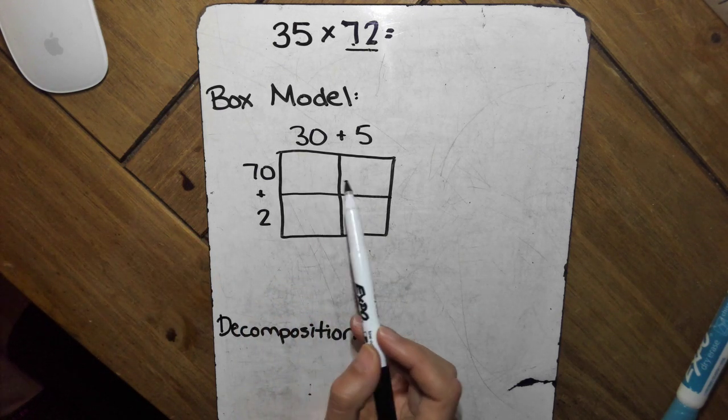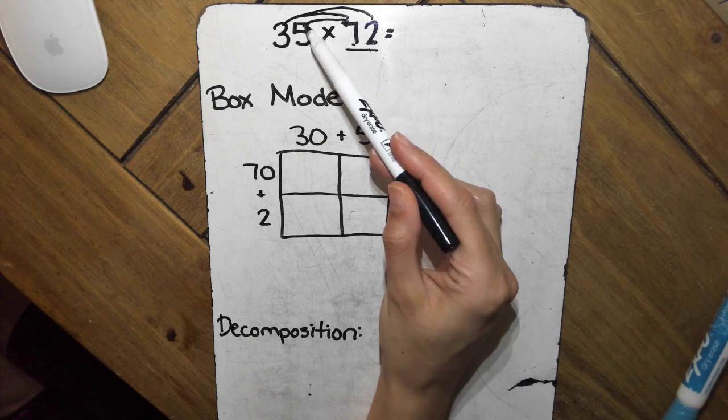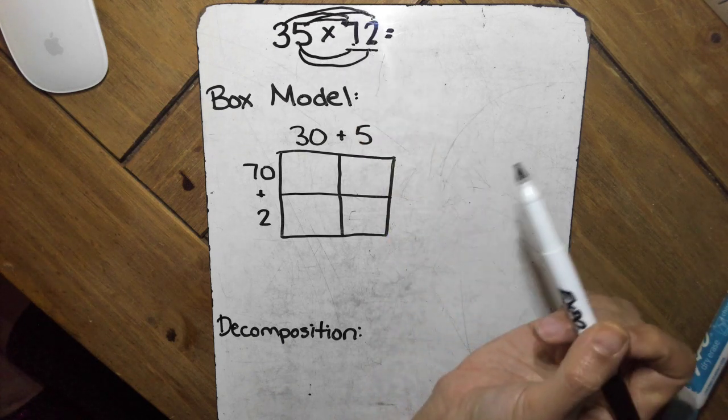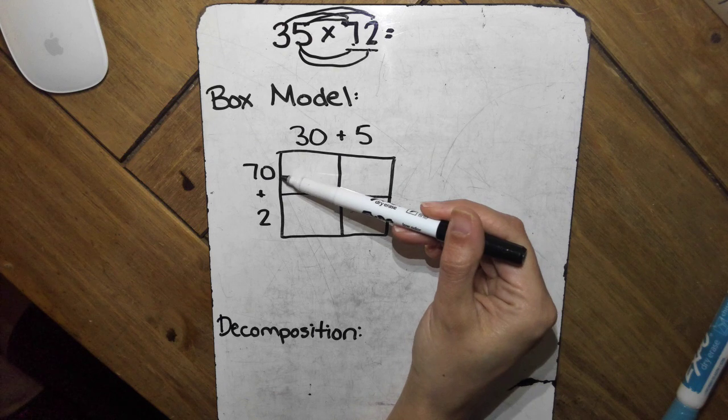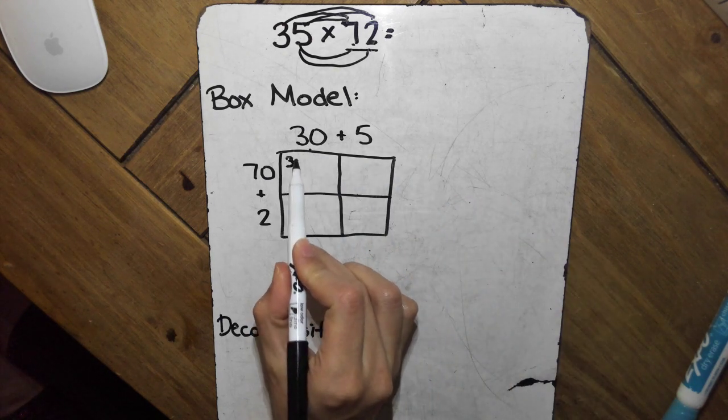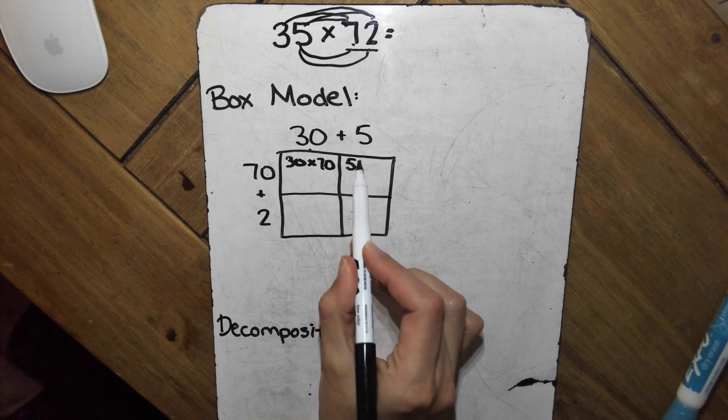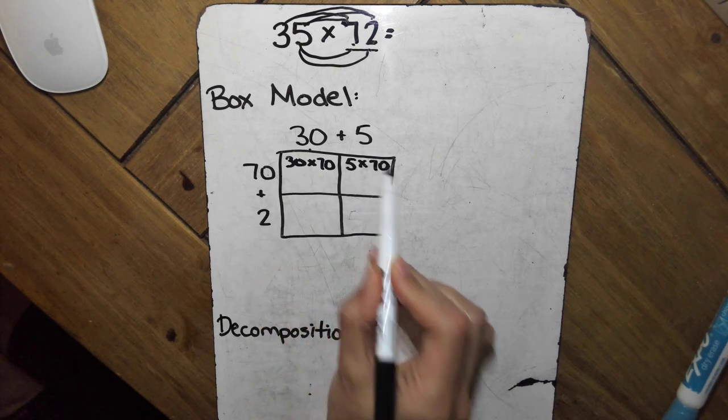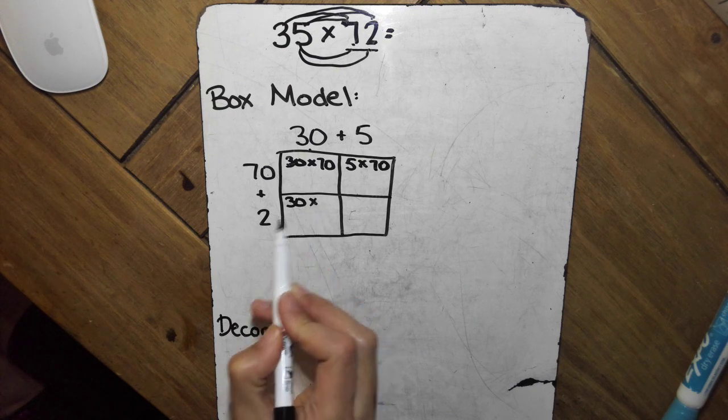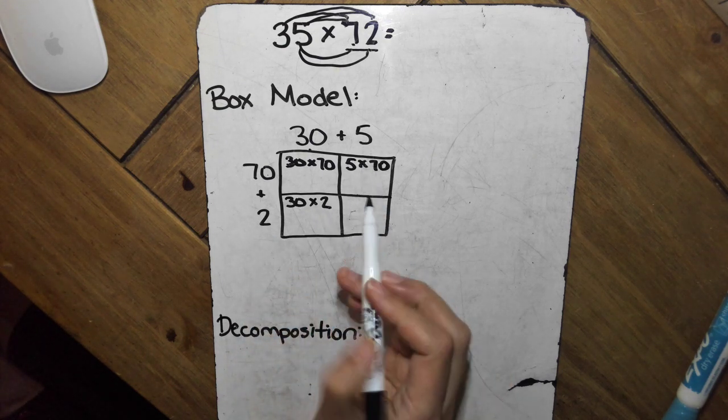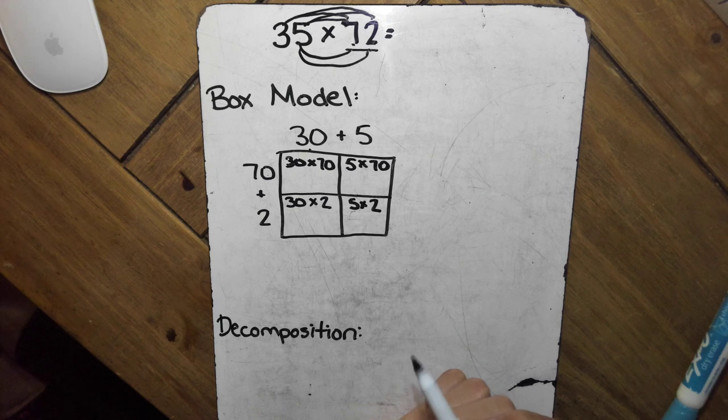So in my box, you can see we have four sections, because there's four digits, and each one is going to be multiplied by the other number. So first we're going to find the length and the width of this box. So we have on top is 30, and we're going to multiply it by the width, 70. Here we have 5 for the length, and we're going to multiply it by 70 for the width. On top here, our length is 30, and we're going to multiply it by 2 for our width. On top here, we have 5 for our length, and over here we have 2 for our width.